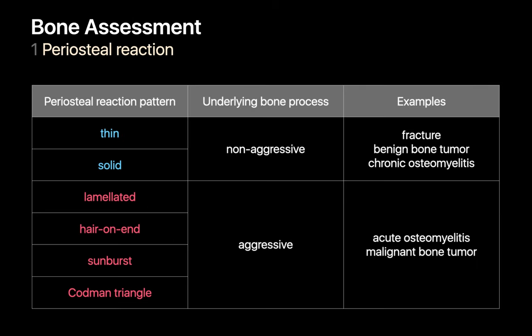When you notice the presence of periosteal reaction on a bone x-ray, it's an important hint that there's been some sort of cortical bone insult, and the periosteal reaction pattern may help suggest if the insult was non-aggressive, like a recent fracture, a benign bone lesion, or chronic osteomyelitis, or if the insult was aggressive, like acute osteomyelitis or a malignant bone tumor.